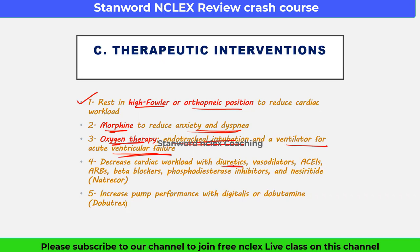To decrease cardiac workload, we give diuretics, vasodilators, ACE inhibitors, ARBs, beta blockers, phosphodiesterase inhibitors, and nesiritide (Natrecor). Diuretics promote fluid output and help reduce swelling. Vasodilators reduce pressure in blood vessels. ACE inhibitors, ARBs, and beta blockers are antihypertensive drugs discussed in earlier videos — all given to reduce cardiac workload.